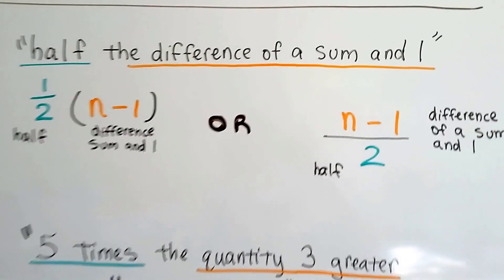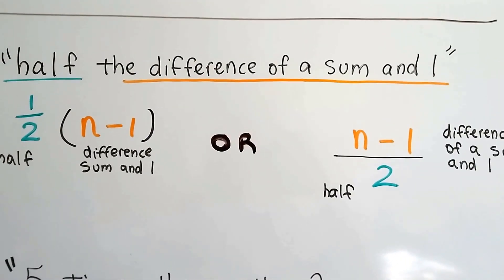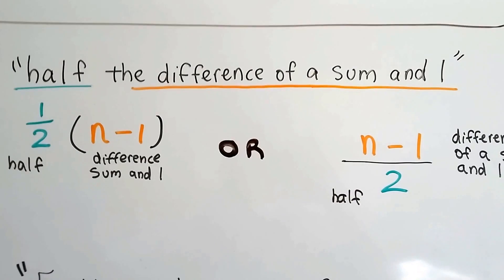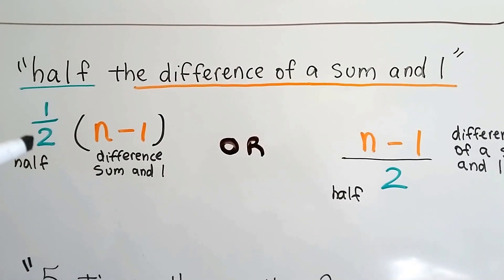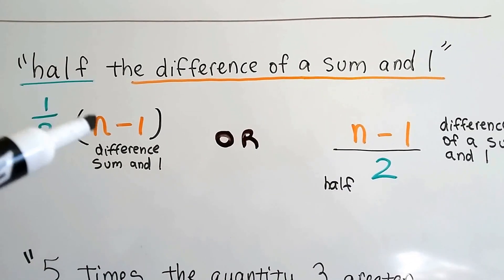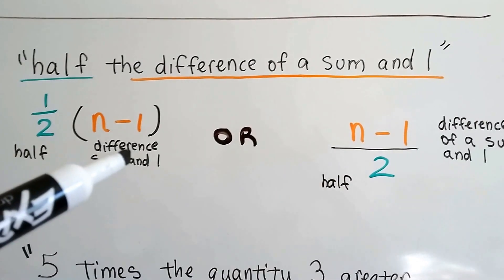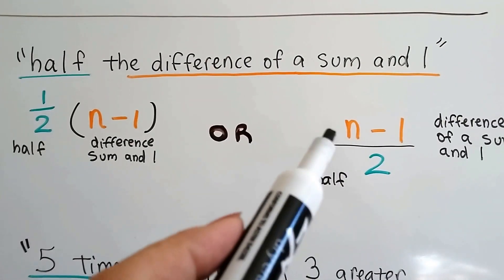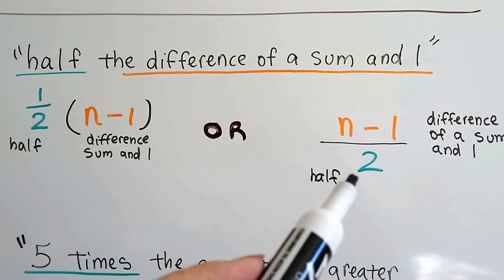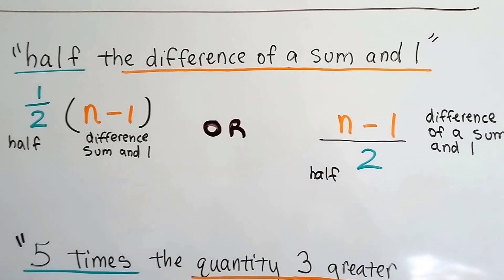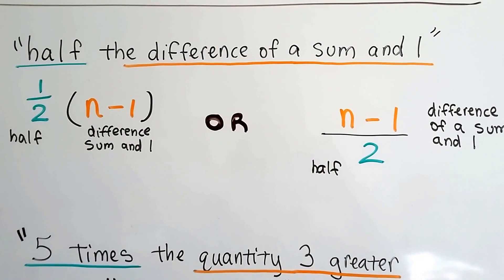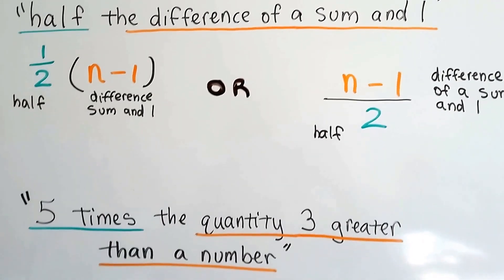What if it says half the difference of a sum and one? We could either multiply a half by the sum take away one, that's the difference. Difference means subtraction. Or we could do that sum minus one divided by two to get half. Either way, we'd get the right answer if we did that equation.